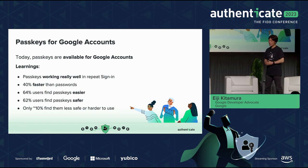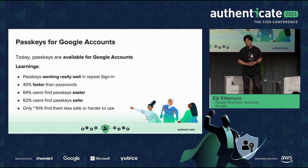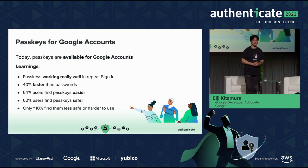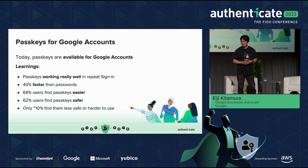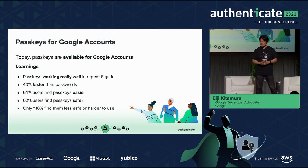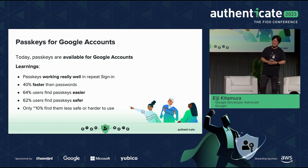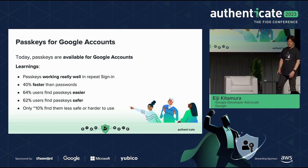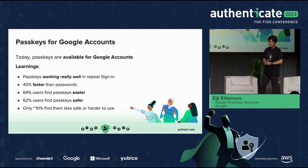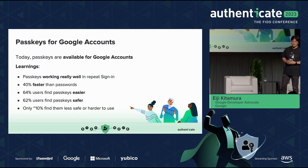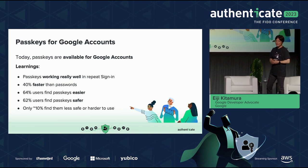In addition to these success stories, we'd like to share Google's own experience. In May this year, Google accounts started supporting PassKeys. Last week, we announced that we've made PassKeys available by default for all users, meaning users can create a PassKey and use it to sign in to Google.com using the device they use daily. PassKeys work really well in repeated sign-ins — they're 40% faster than passwords.